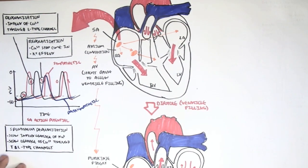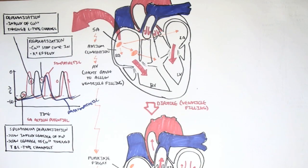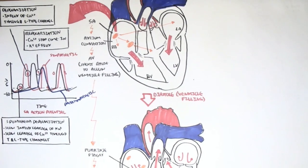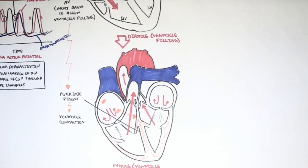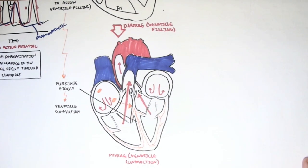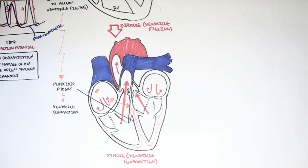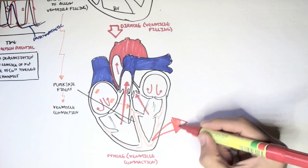Now we know that when pacemaker cells depolarize, they produce an action potential which causes the muscles to contract. This graph was specifically for the sinoatrial node action potential. The atrioventricular node and the Purkinje fibers are somewhat similar, just not as strong. When these pacemaker cells coordinate the contraction of cardiac muscle cells, the muscle cells themselves have to depolarize in order to contract. So let's look at the ventricle muscle cells, because they are the ones that eject blood out of the heart.